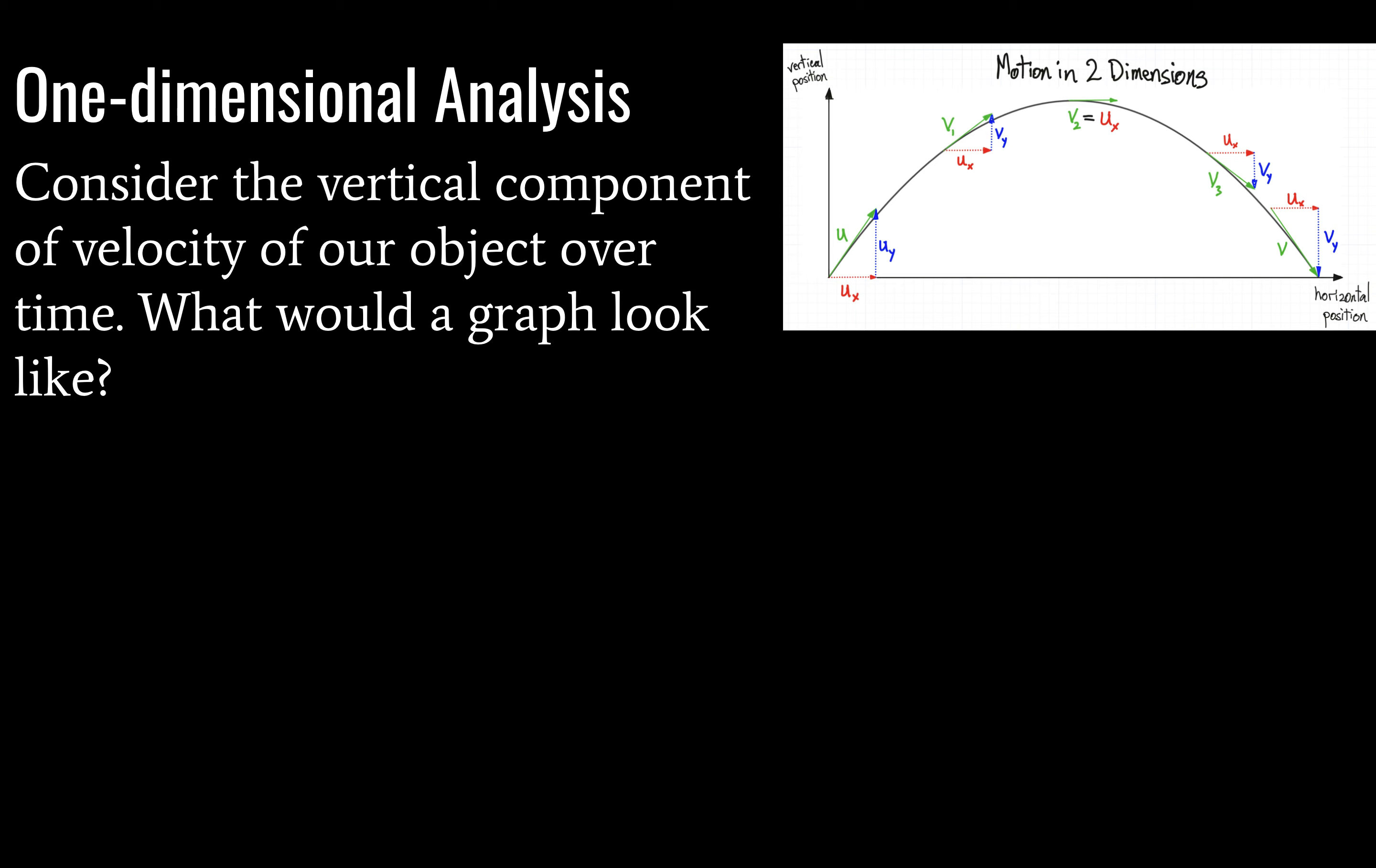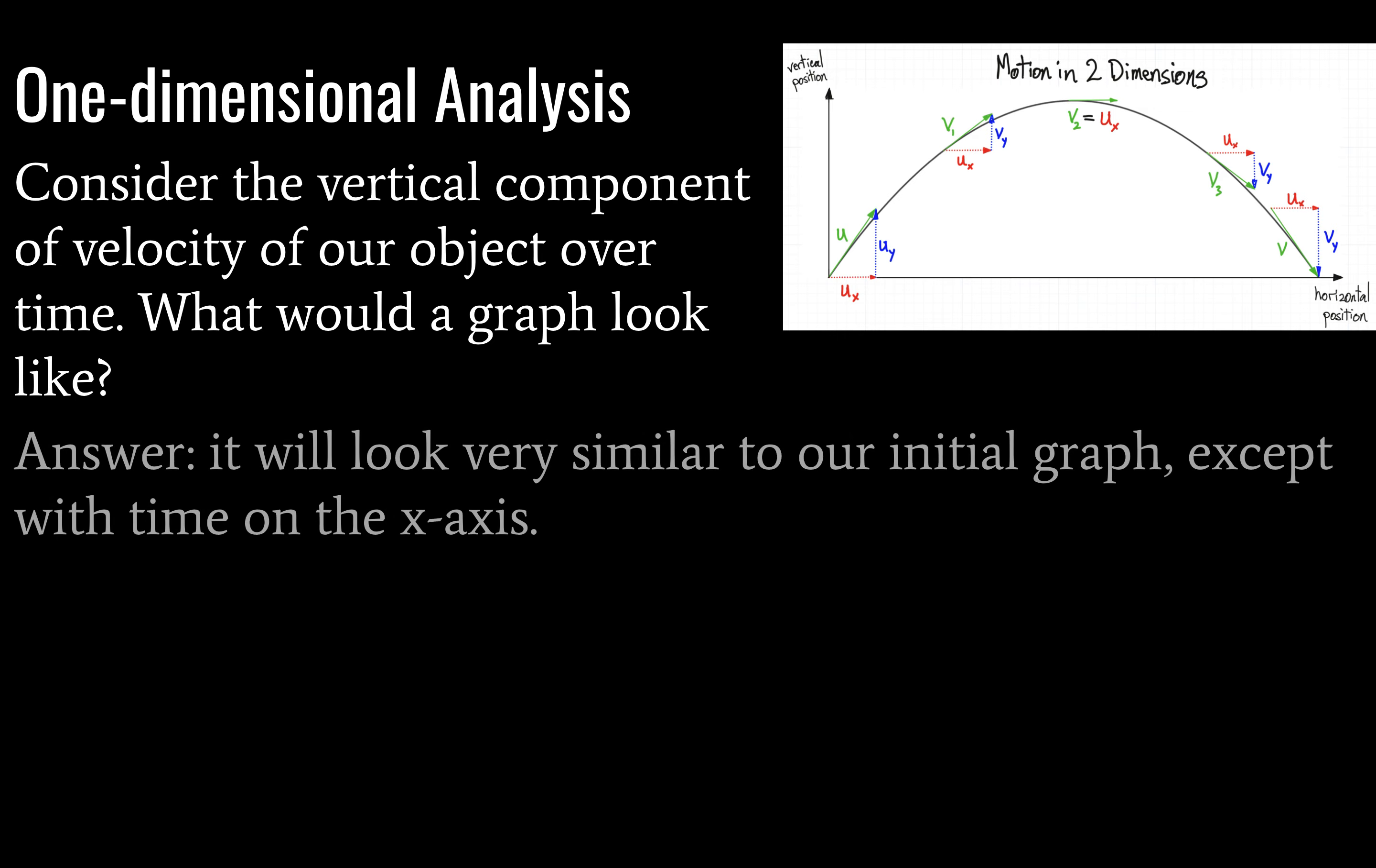I'm assuming that you thought it over. And the answer is this: it's going to look very much like this graph, except we'll have time on the x-axis. The amount of time will be given by the mathematics in your data booklet, but in terms of the visual look of the graph, it's going to be a parabola pointed downward, so a negative parabola.